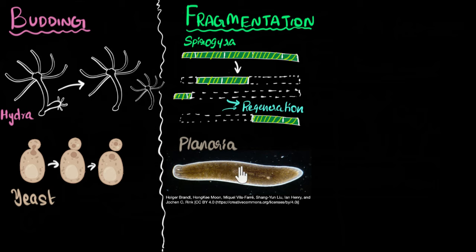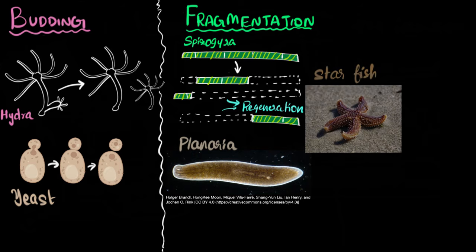Again, when planaria matures, it just sheds off its tail, this part. And then, the two halves grow, regenerate the rest of their body. And then, now you have two planaria. Another famous example is starfish.